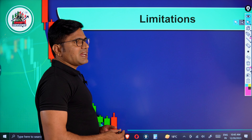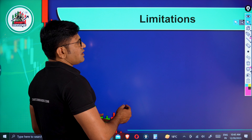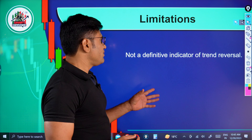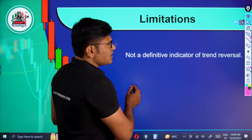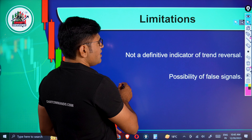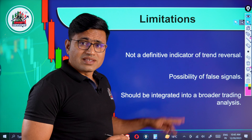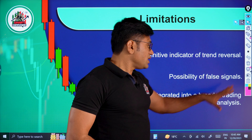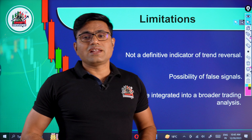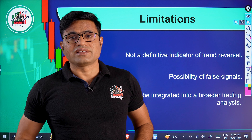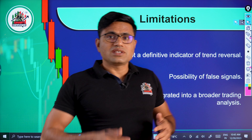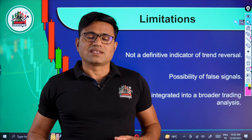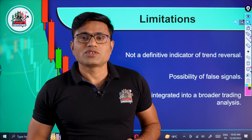There are also some limitations. We don't have a definitive indicator — we should not trade without confirmation. We may have false signals, but this can be addressed with other confirmations. We need broader trade analysis. If you have a short trade on a daily or weekly chart and the trend is bullish, we don't have to worry too much about it.